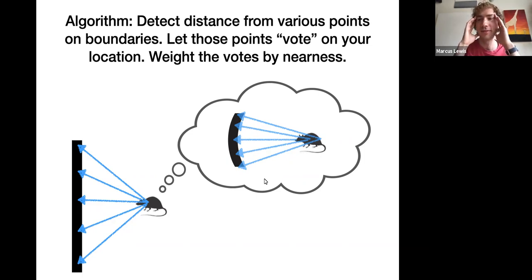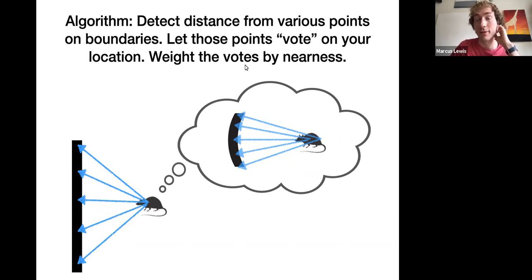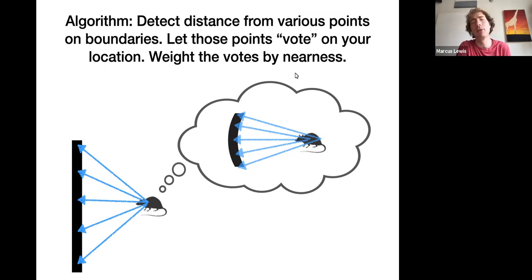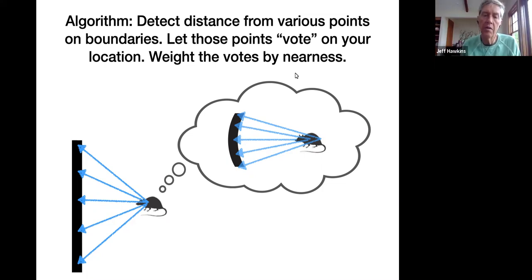An important final piece of the setup: you have to weight votes by nearness. If you're taking in sensory observations from objects at various distances, you give the nearby one more weight when voting on your location. This is principled because there's less error in that closer displacement vector. Also, this weighting by nearness is actually required for distortions to occur in the model.